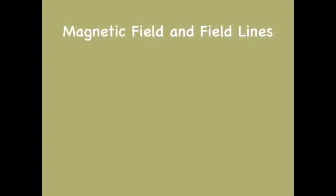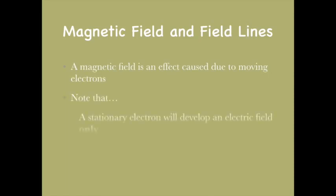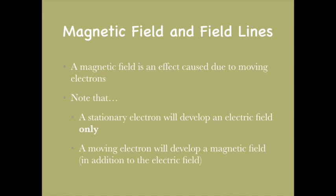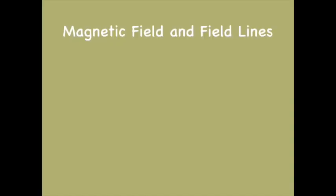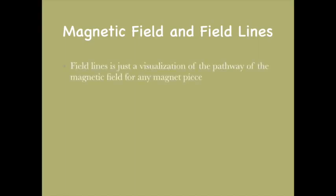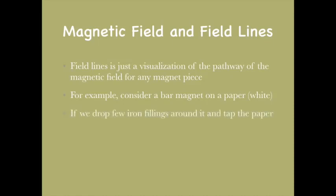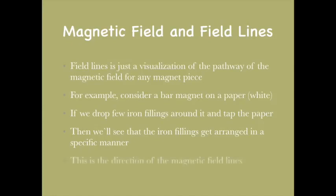What is a magnetic field? A magnetic field is an effect caused due to moving electrons. Note that any stationary electron will develop an electric field only, but a moving electron will develop a magnetic field in addition to the electric field. Coming to field lines, field lines is just a visualization of the pathway of the magnetic field for any magnet. For example, if you consider a bar magnet on a piece of paper and draw iron filings around it and tap the paper, the iron filings will get arranged in a specific manner — this is the direction of the magnetic field lines.